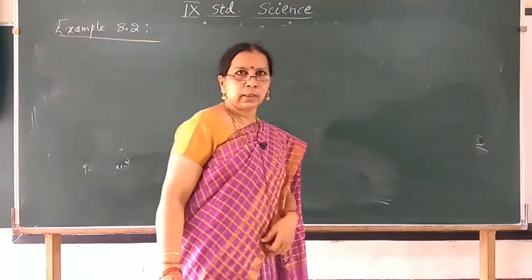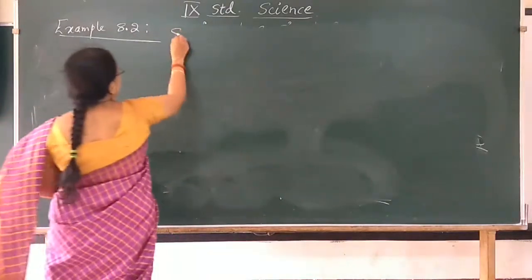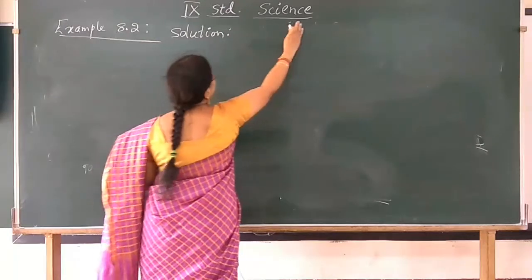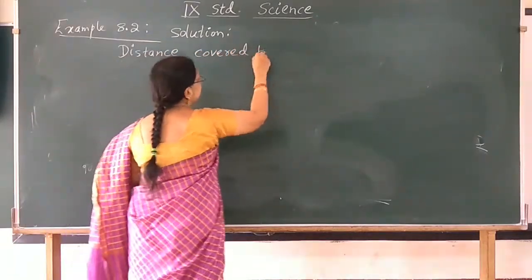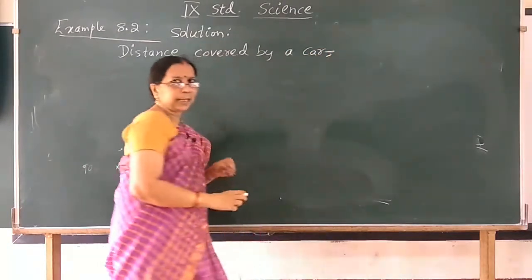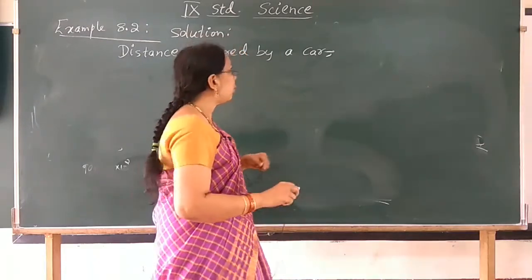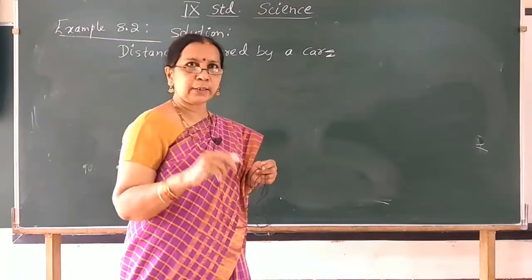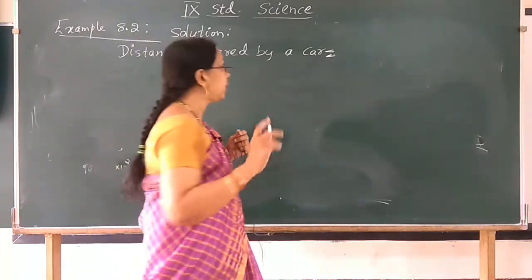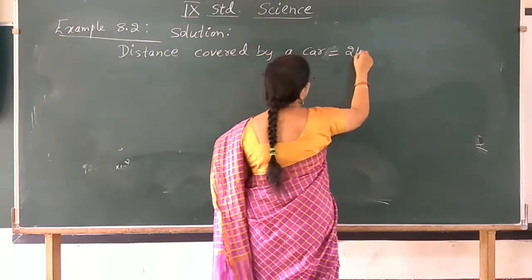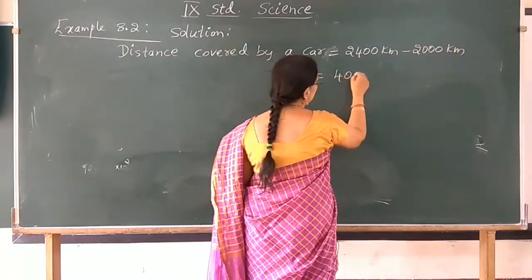The odometer of a car reads 2000 km at the start of a trip and 2400 km at the end of the trip. If the trip took 8 hours, calculate the average speed of the car in km per hour and meter per second. Distance covered by the car is 2400 km minus 2000 km, which equals 400 km.